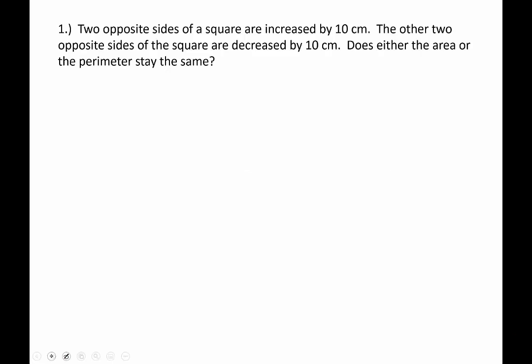In this example, two opposite sides of a square are increased by 10 centimeters. The other two opposite sides of the square are decreased by 10 centimeters. Does either the area or the perimeter stay the same? I encourage you to pause the video and see what you come up with, and then you can check your work against mine.